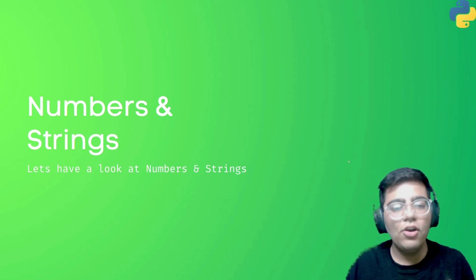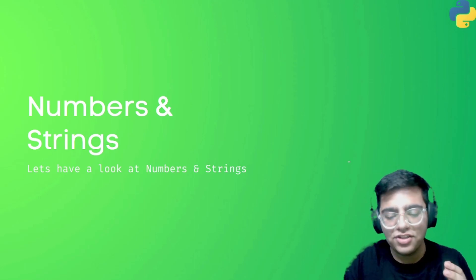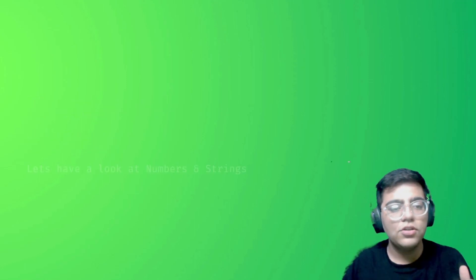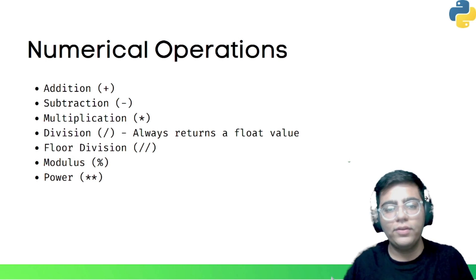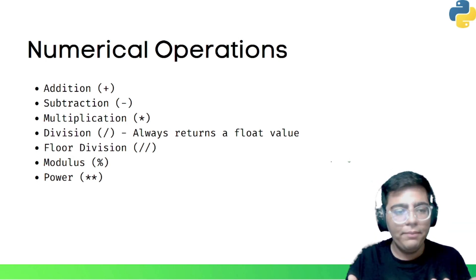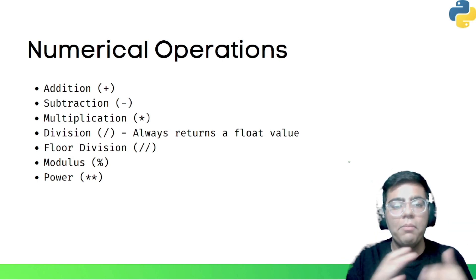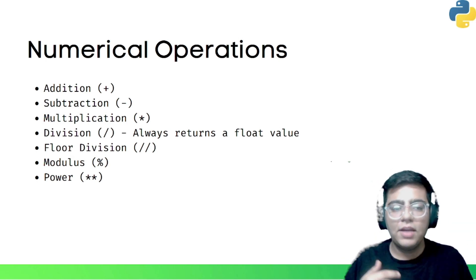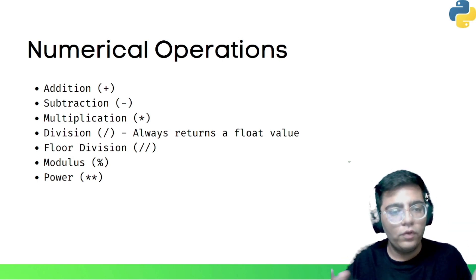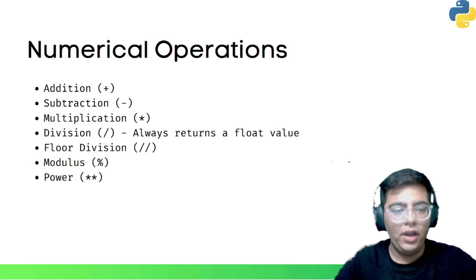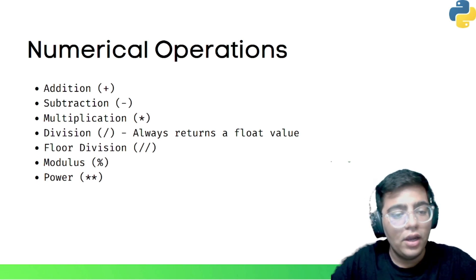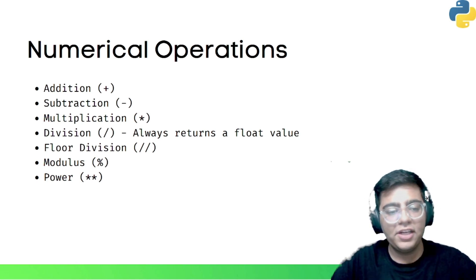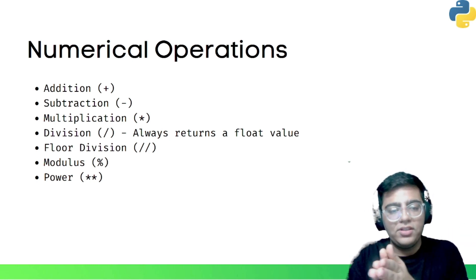Hey guys, Kevin here. Let's have a look at numbers and strings. In the previous video we took the example where we added two numbers, a and b. Now there are multiple operations which can be performed on two variables. I have listed them here: addition, subtraction, multiplication.